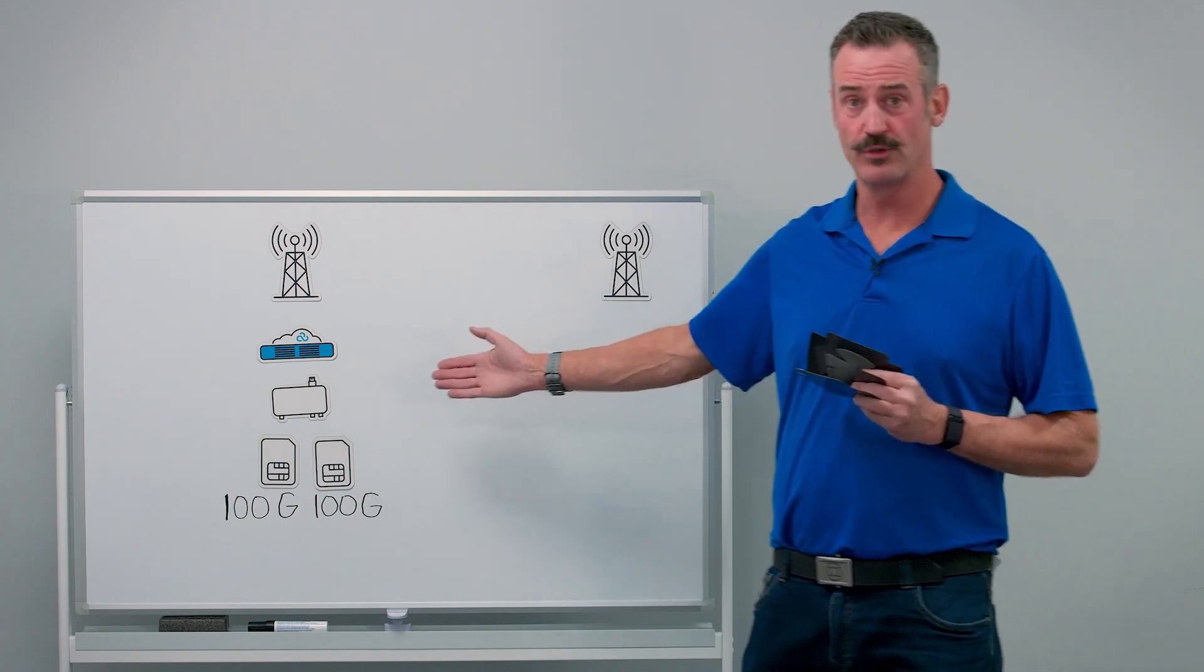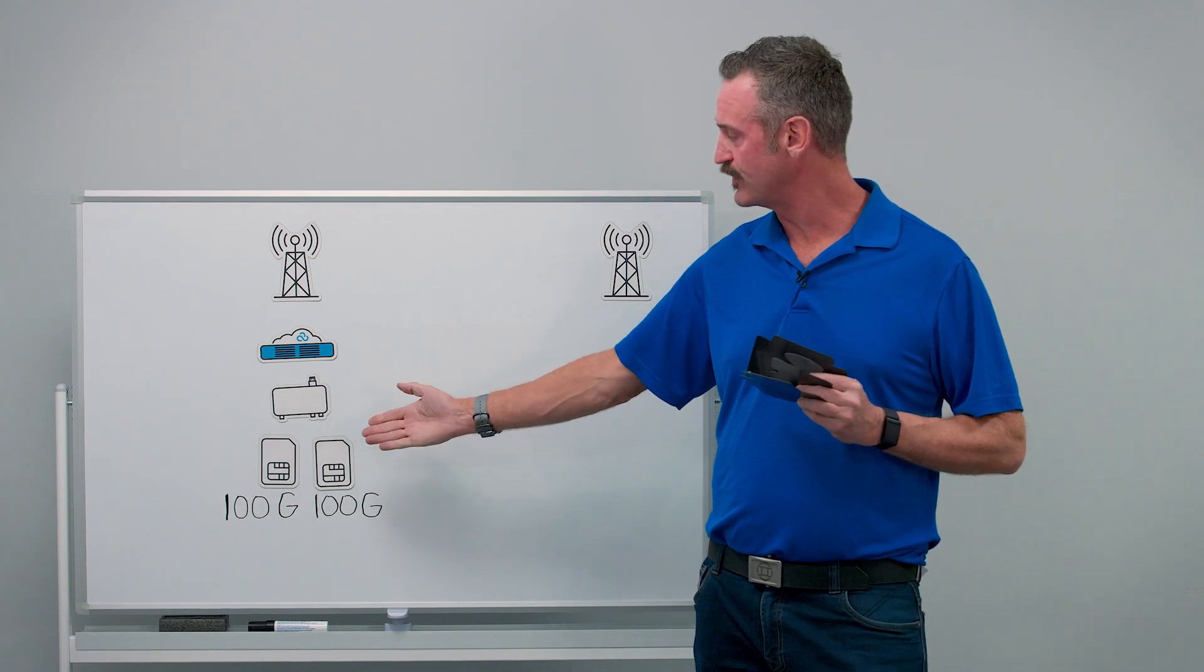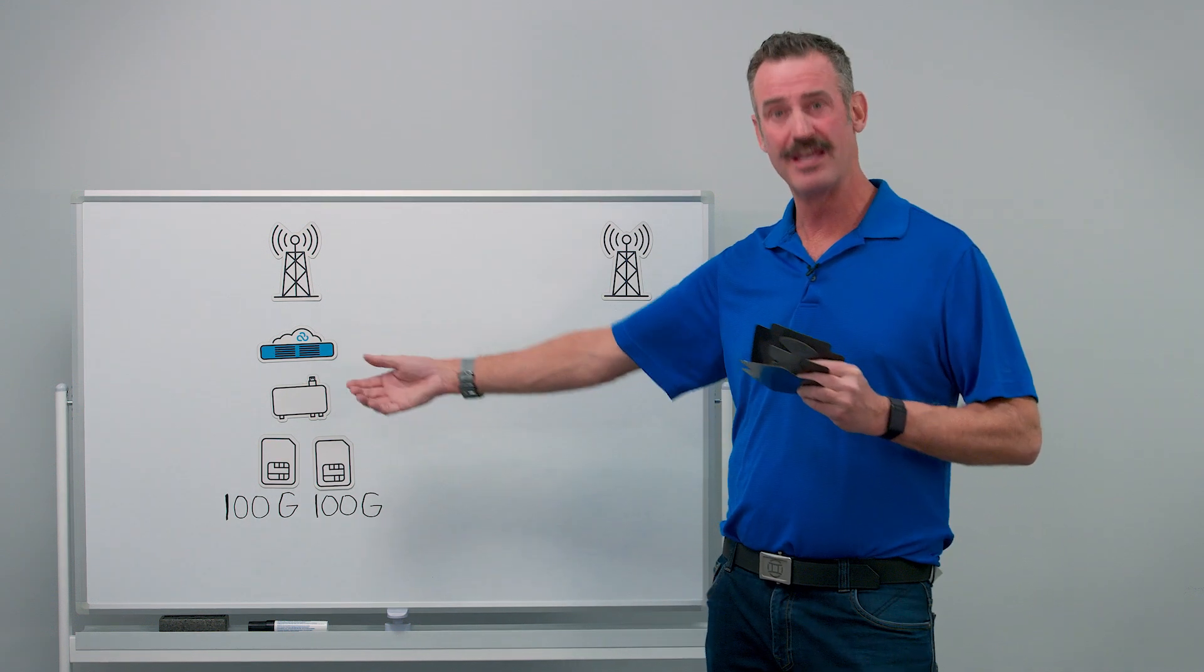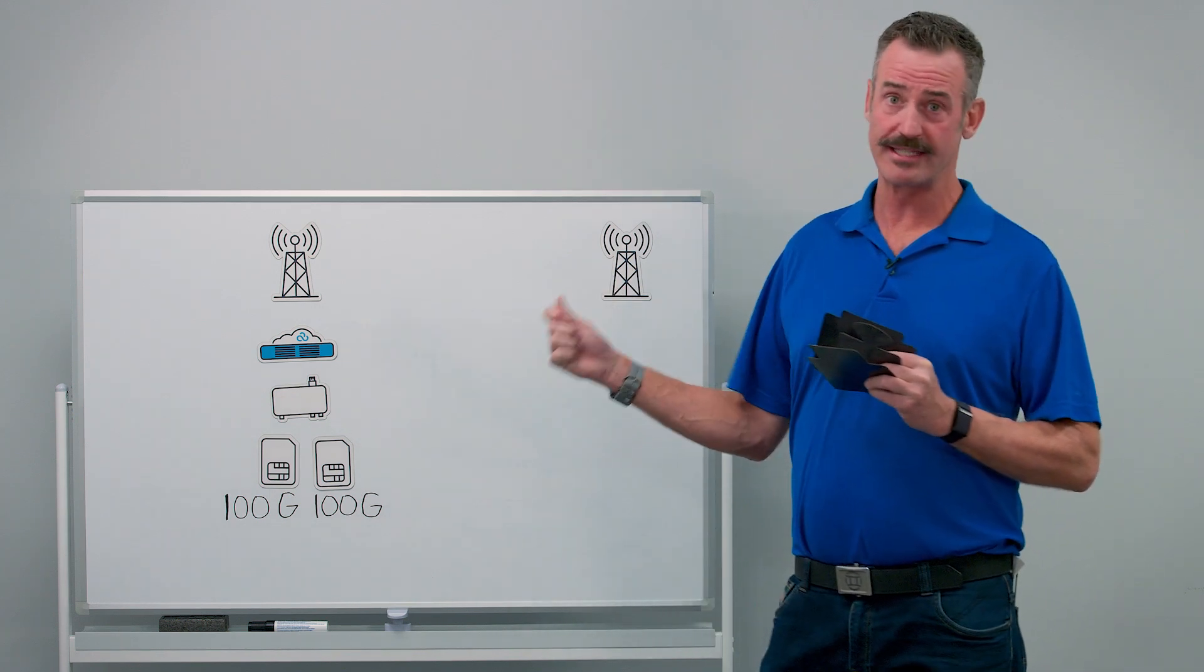This first scenario, I have two SIMs with 100 gigs per SIM. Our data algorithm can count the data used on the primary SIM, efficiently fail over to the second SIM, and also reset at the end of the month.